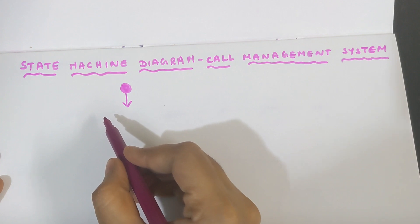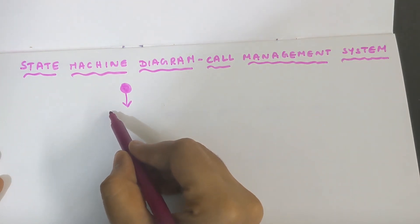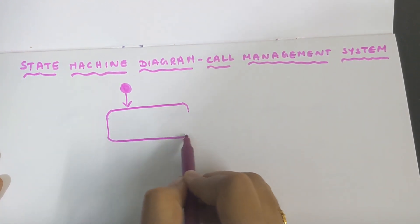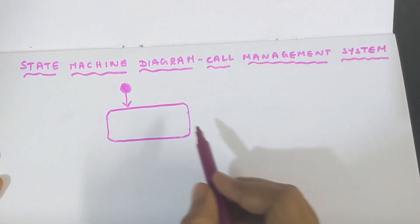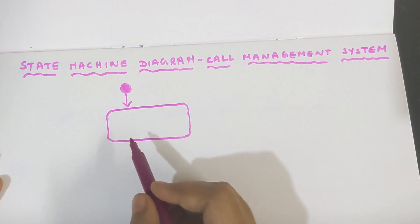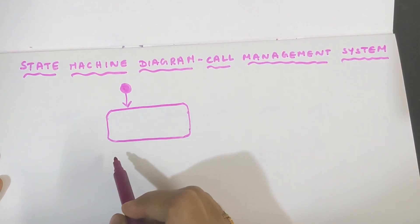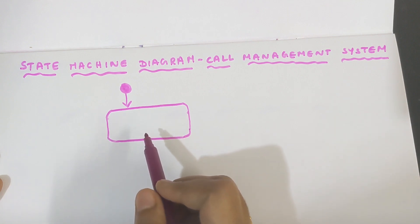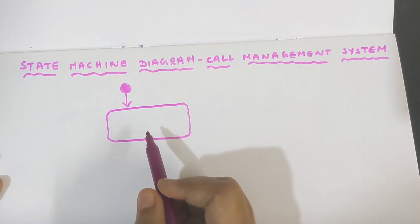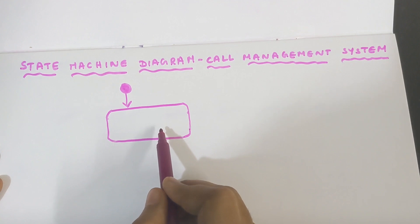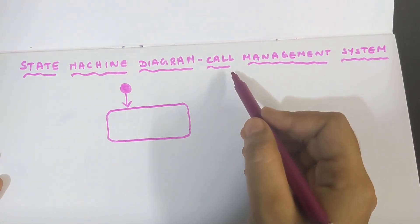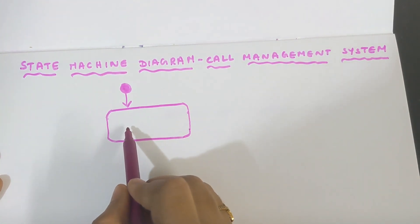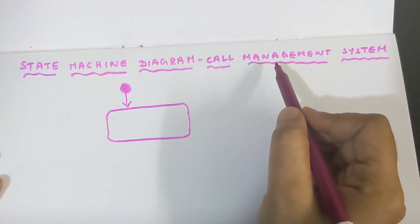Next, draw the symbol of a state. The symbol of a state is a rectangle with rounded corners. Inside this symbol, write the name of the state. The state name should be understandable to anyone looking at the diagram — easily understandable — and it should be relevant to the topic. Here, for call management system, the state name should be relevant to call management only.